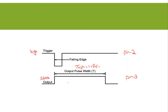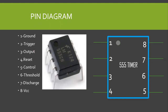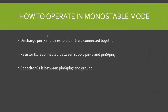Now, how to use the 555 timer in monostable operation. We know the pin diagram of the 555 timer — we have 8 pins: ground, trigger, output, reset, control, threshold, discharge, and the supply voltage VCC. To use the 555 timer in monostable mode, we need to connect the discharge pin number 7 and the threshold pin number 6 together.